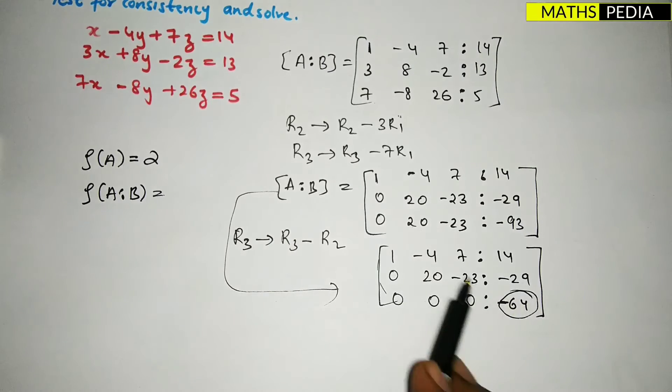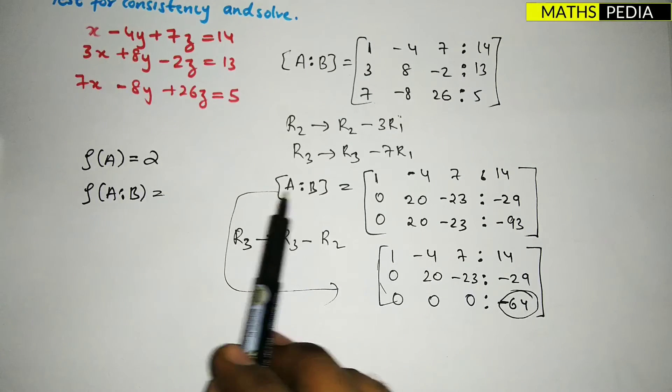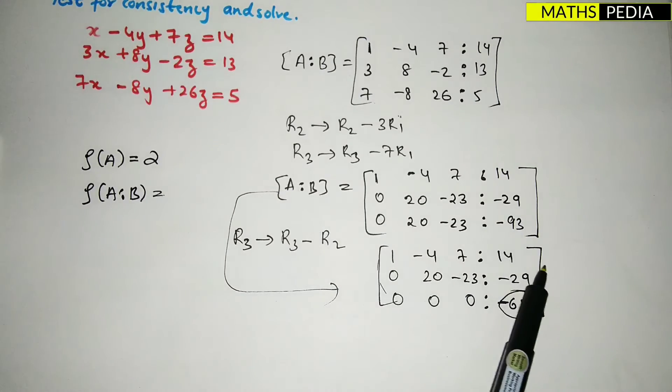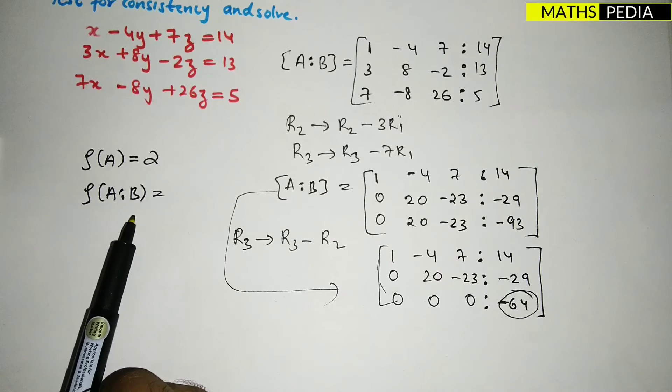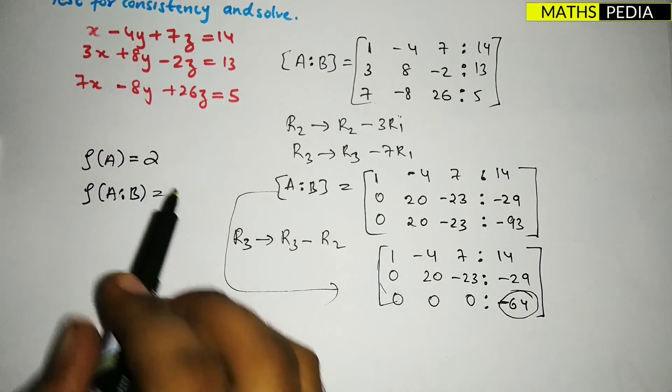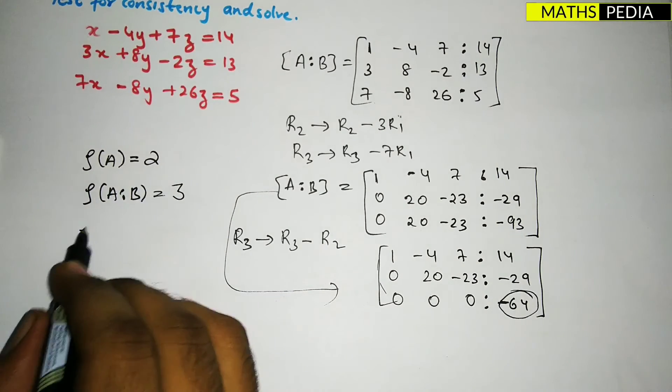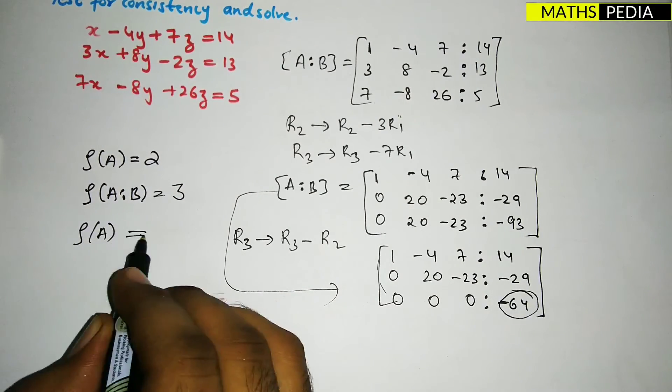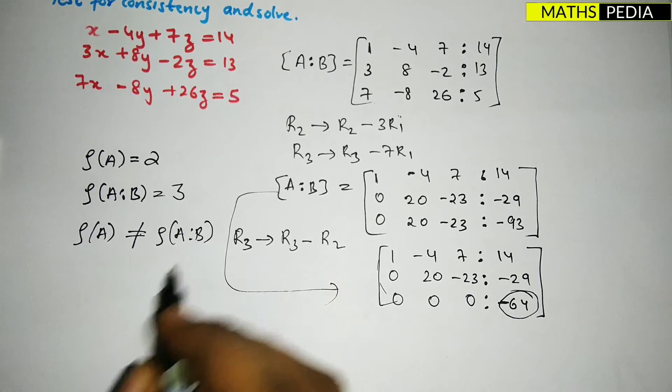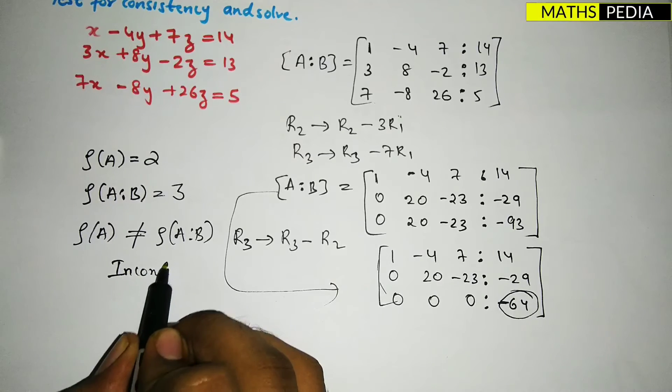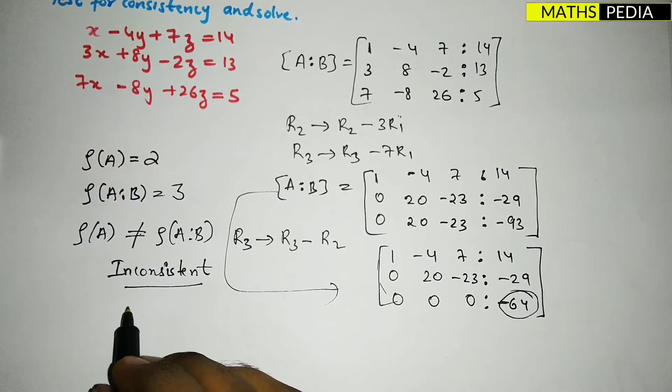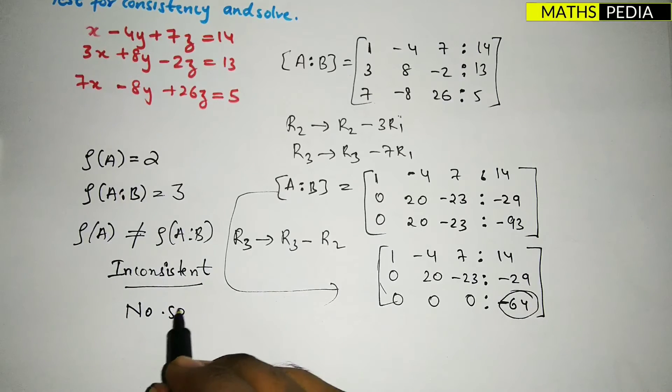And rank of [A|B], the whole thing: how many non-zero rows? One, two, and this one is also a non-zero row since one element is there. Observe, if it was zero we could say rank of [A|B] is two, but here one element is there, which is -64, it is not zero. So rank of [A|B] is three. Hence rank of A is not equal to rank of [A|B], so it is inconsistent and it will have no solution.